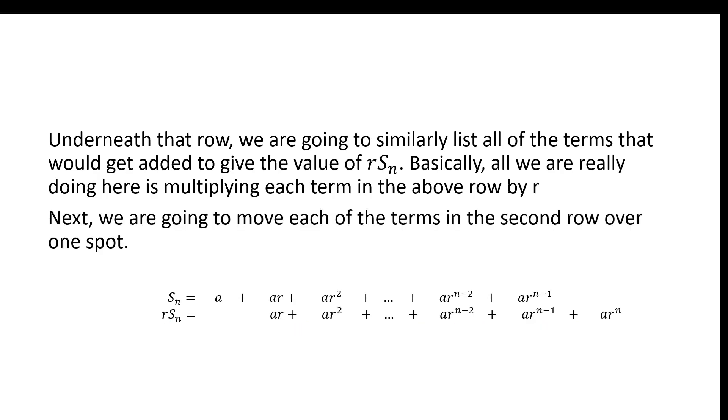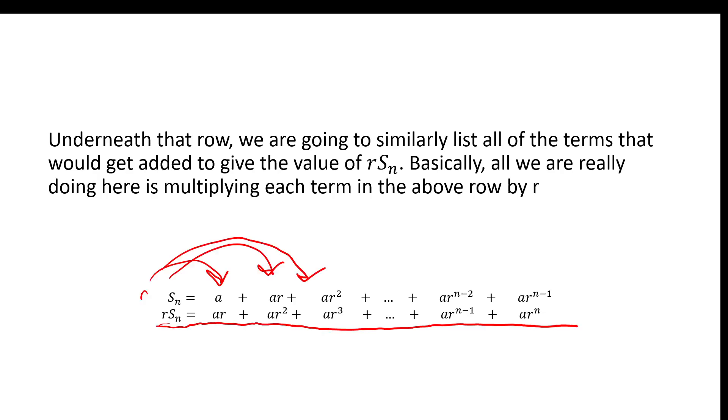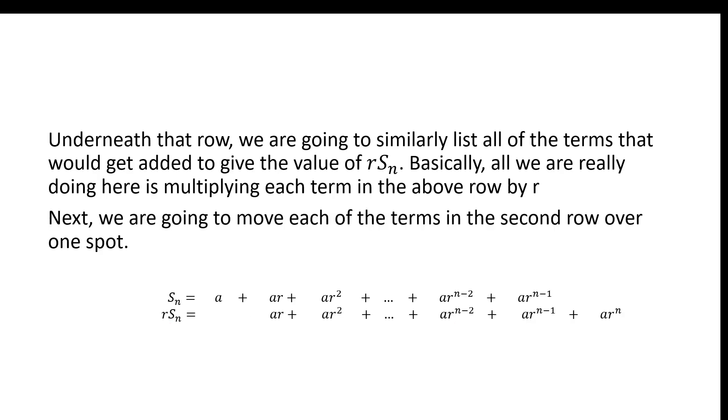Now what we're going to do, we're just going to push that row over one spot. The last row, R S_N equals A R plus A R squared plus A R cubed, etc. That last row is completely unchanged in this one, except we've just left a blank space. Now we're going to do something pretty ingenious. What we're going to do is we're going to subtract.